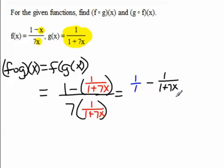Remember from your previous algebra skills that we need a common denominator. The common denominator here would be 1+7x. Since the first fraction does not have that denominator, I would multiply top and bottom by 1+7x.